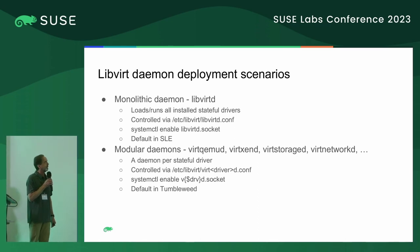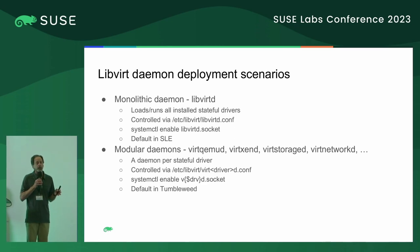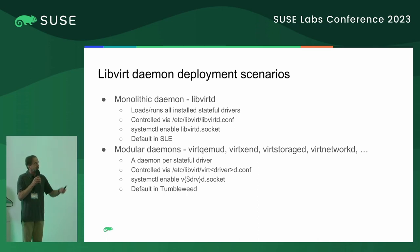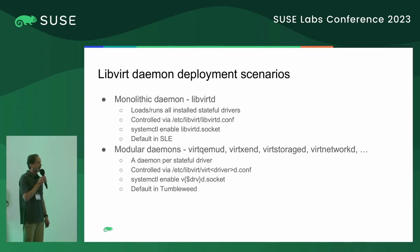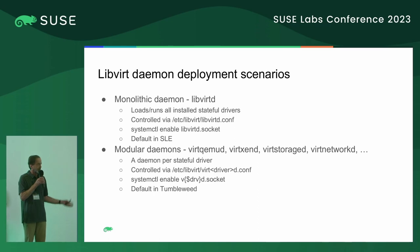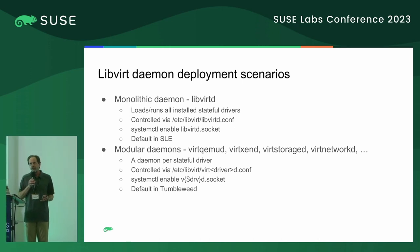We also need to talk about how to run these packages. There are two options: the monolithic daemon or modular. The monolithic daemon can load and run any stable drivers that are installed, is controlled via libvirtd.conf, and you just need to enable the sockets — it's the default configuration in SLEE. With modular daemons, there's a daemon per stable driver, each with an individual configuration file, and you need to enable all the sockets. This is the default in Tumbleweed, although no daemons are enabled by default there — you have to go and enable the sockets individually.